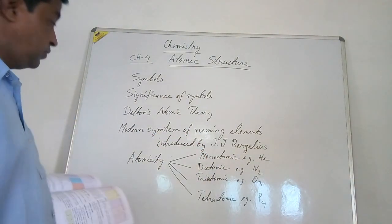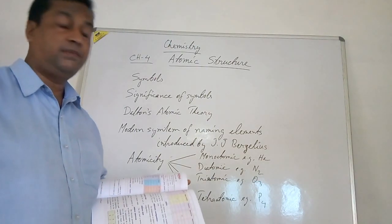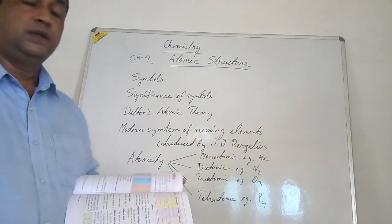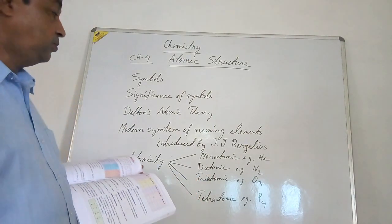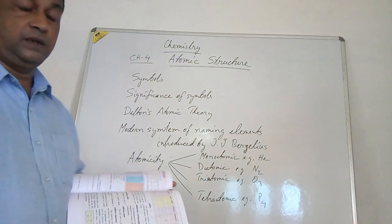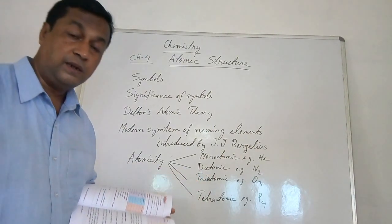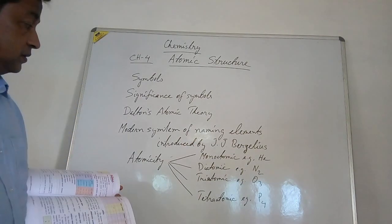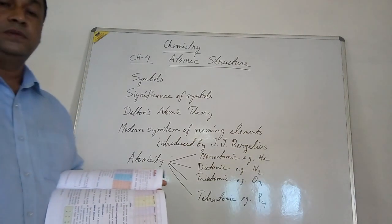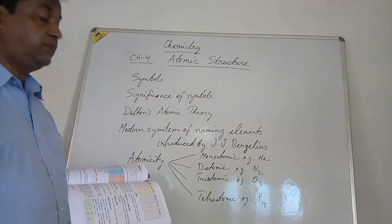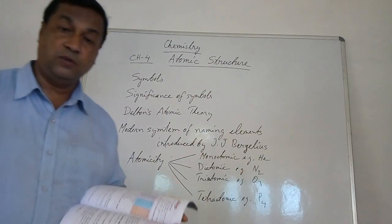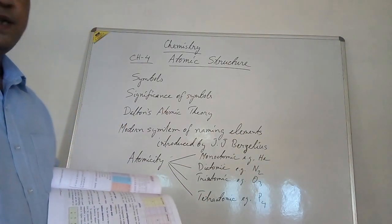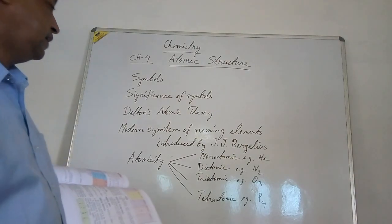For example, helium and all other noble gases are monoatomic. The molecules of noble gases are monoatomic because they have only one atom in their molecules.